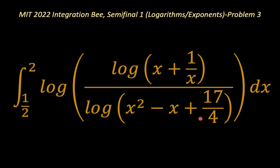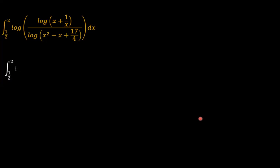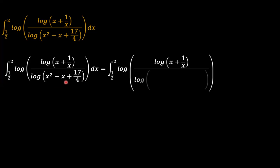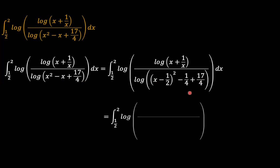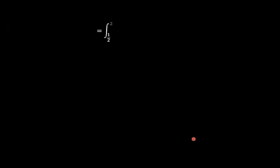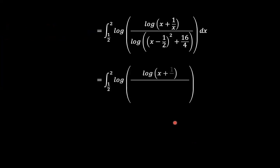Jumping on to the solution. The first thing I'd like to do is rearrange a few things. Looking at the denominator, we could try to express it in a more succinct fashion. So x squared minus x plus seventeen over four — these first two terms can be expressed as x minus one half, squared, minus one quarter. Then we add the seventeen over four. Negative one quarter plus seventeen over four results in sixteen over four, which is four. So this denominator now becomes x minus one half, squared, plus four.